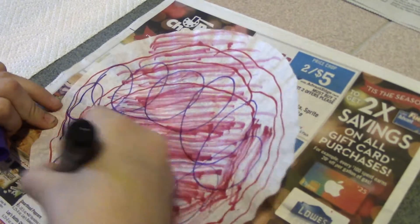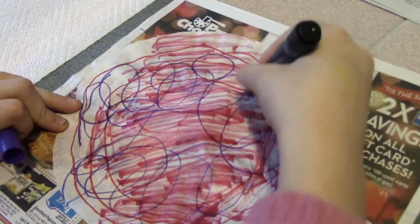For the coffee filter heart banner, you're going to need some round coffee filters, washable markers, a spritz bottle, some yarn, and some scissors.